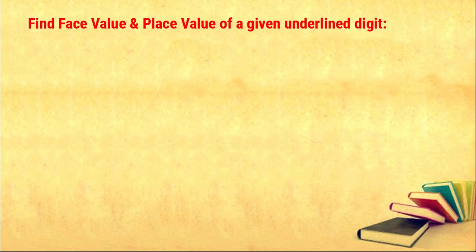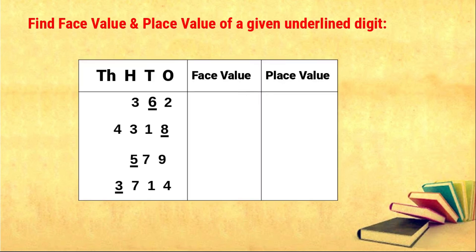Okay children, now we are going to find the face value and place value of some given underlined numbers. The first number is three hundred and sixty two, and the underlined digit is six. Six lies in the tens place. So the face value of six is six, and the place value is six times ten, that is sixty.